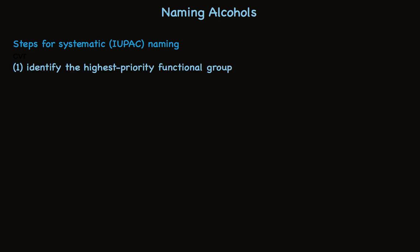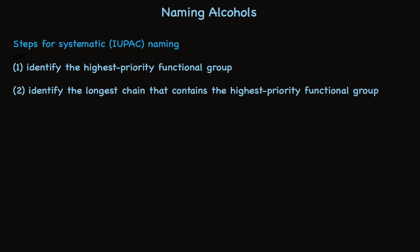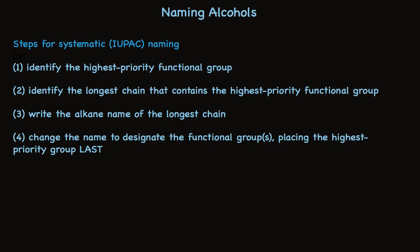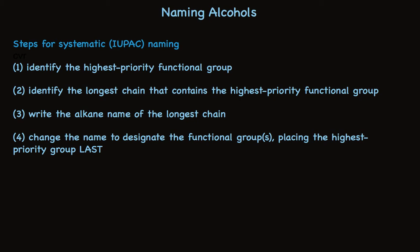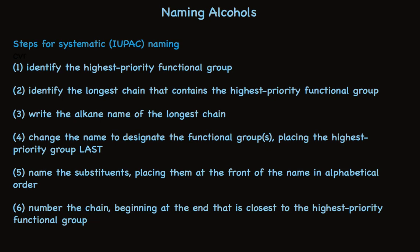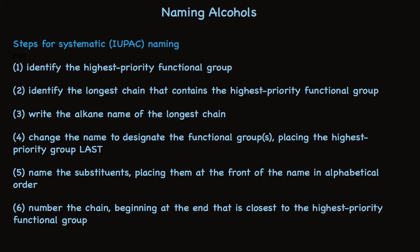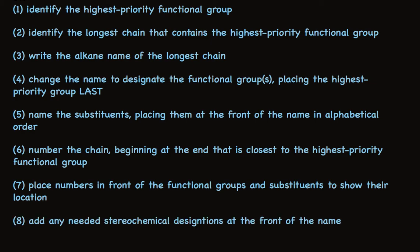The very first thing you do is identify the highest priority functional group. Once you've identified that functional group, find the longest chain that contains it — it may not be the longest chain in the molecule. Write the alkane name of that longest chain, then change the ending to reflect the functional groups present, with the highest priority functional group placed last. Name substituents in alphabetical order in front, number the chain beginning from the end closest to the highest priority functional group, and place a number in front of each substituent. Finally, add any needed stereochemical designators — like R or S, or E or Z — at the very front.